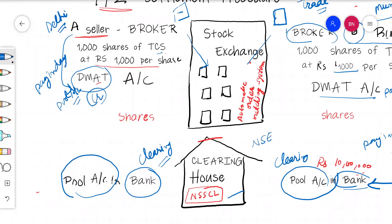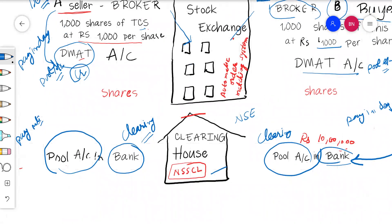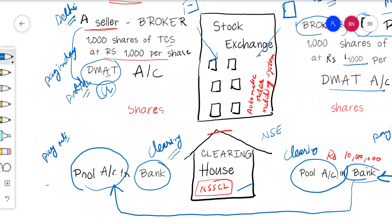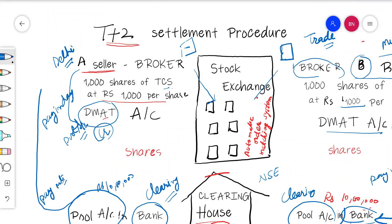The next day is the payout or settlement day. The Rs. 10 lakh that was in the buyer's broker's pool account is transferred to the seller's broker's pool account. From there, the Rs. 10 lakh is transferred to the seller's bank account — and the seller receives the money. That is the payout day.